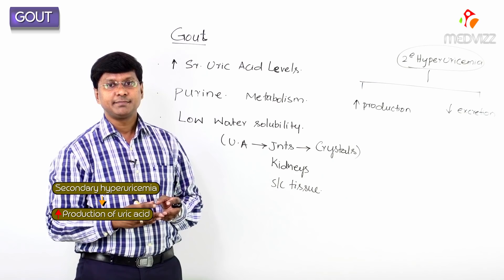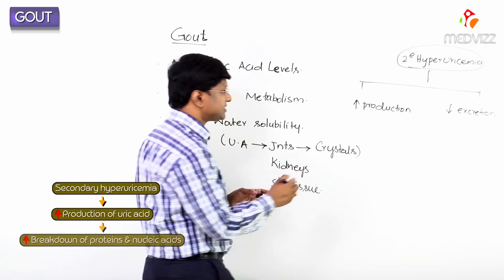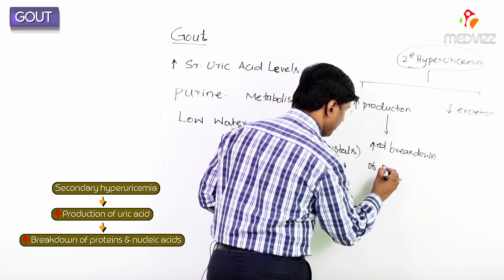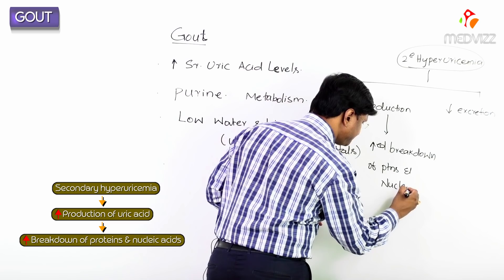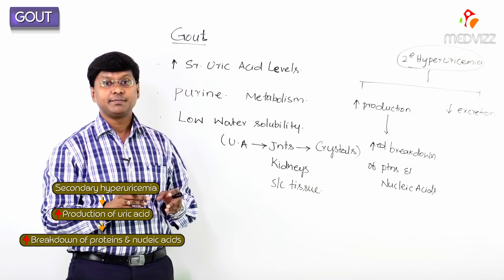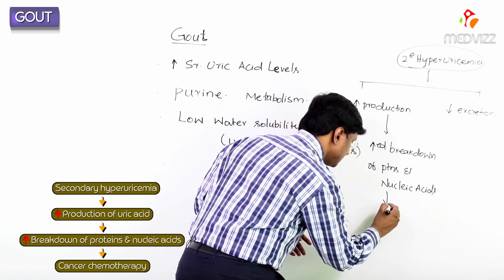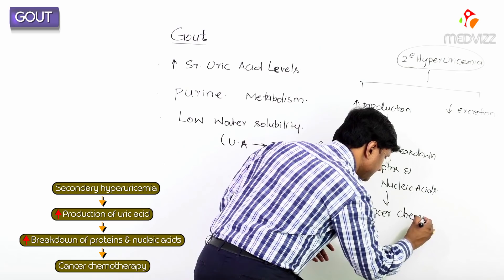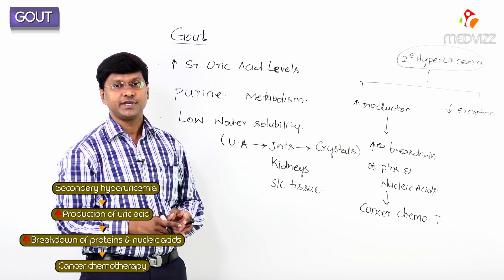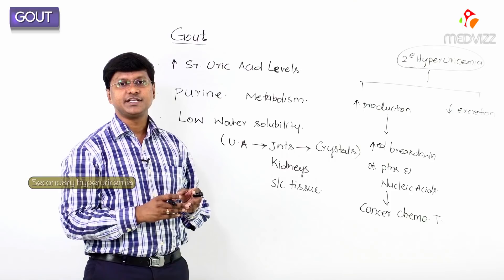In which clinical conditions is there excessive production of uric acid? Wherever there is increased breakdown of proteins and nucleic acids — for example, in individuals who are taking cancer chemotherapy. In this group of individuals, there is increased breakdown of proteins and nucleic acids, resulting in increased production of uric acid, which is called secondary hyperuricemia.